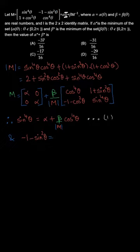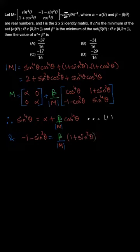Element a12 is minus sin²θ on one side, and on the other side it is 0 plus beta divided by det(M) into (1 + sin²θ). The (1 + sin²θ) terms cancel each other, leaving minus 1. Cross-multiplying gives us beta.